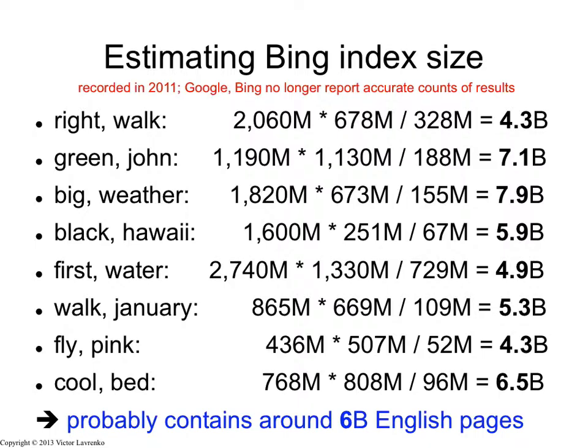These vary, they're different from each other, but they're all surprisingly in the same ballpark. So I'm getting numbers between 4 and 8 billion, and it's all in a fairly narrow range. So what can I guess from that? I can guess that in 2011, Bing index size was probably around 6 billion English pages.